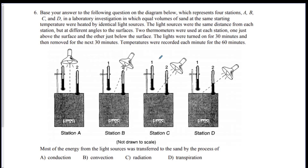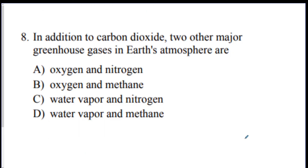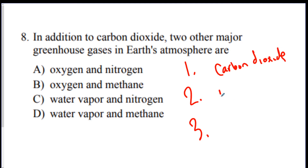Question 6: most of the energy from the light source — there's your key word, light — was transferred to the sand by the process of: light is radiation, so the answer is C. Question 8: in addition to CO₂, two other major greenhouse gases in the atmosphere are what? Remember the top three: carbon dioxide, methane, and water vapor. The answer is D.